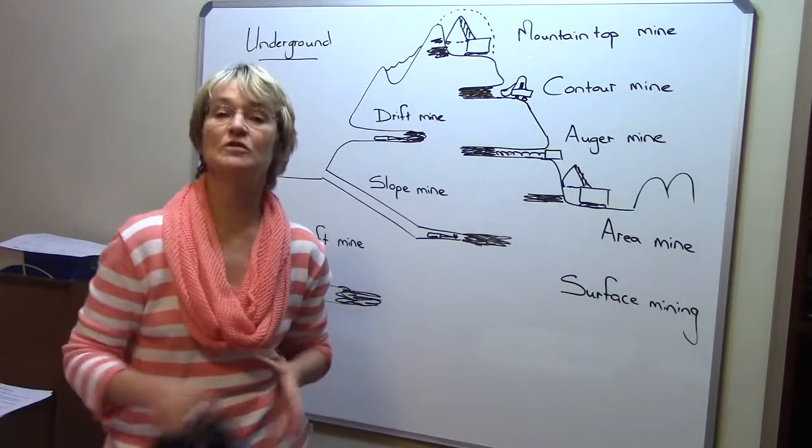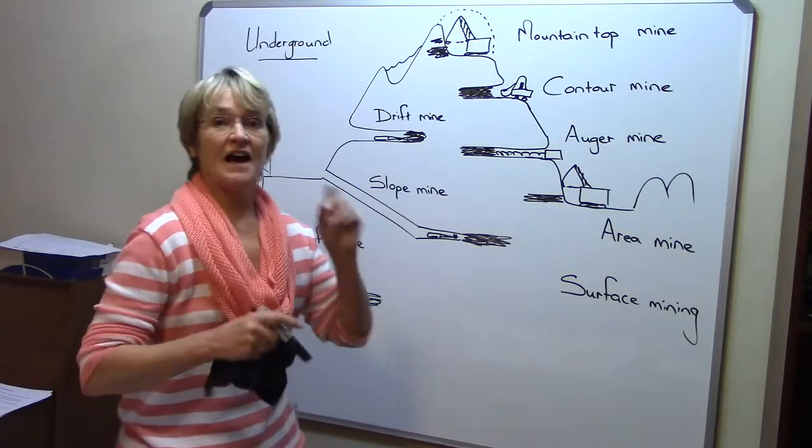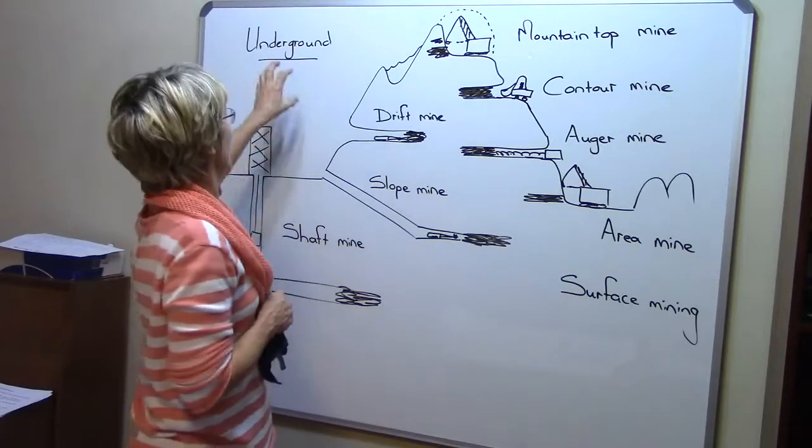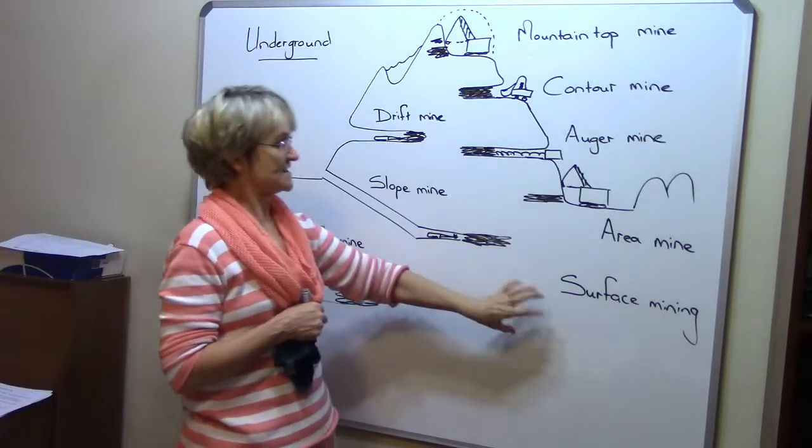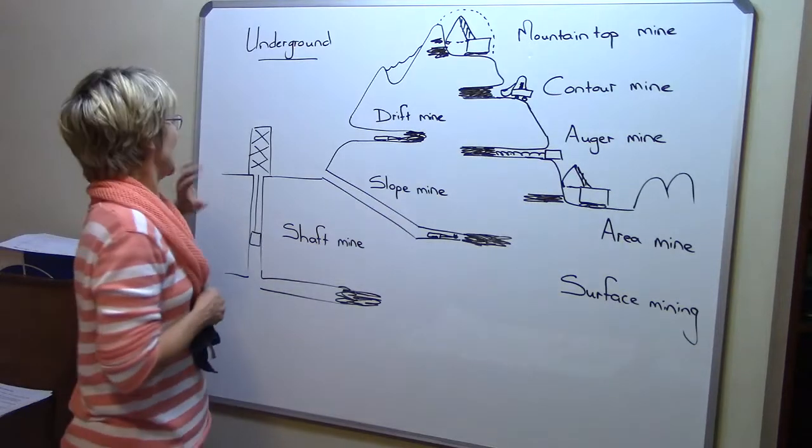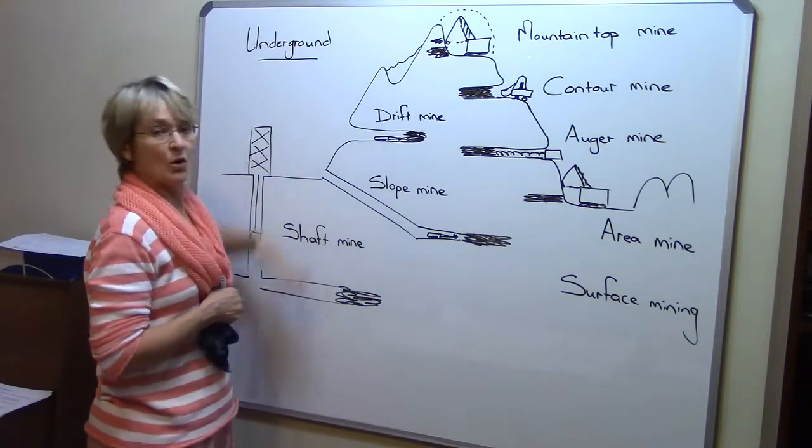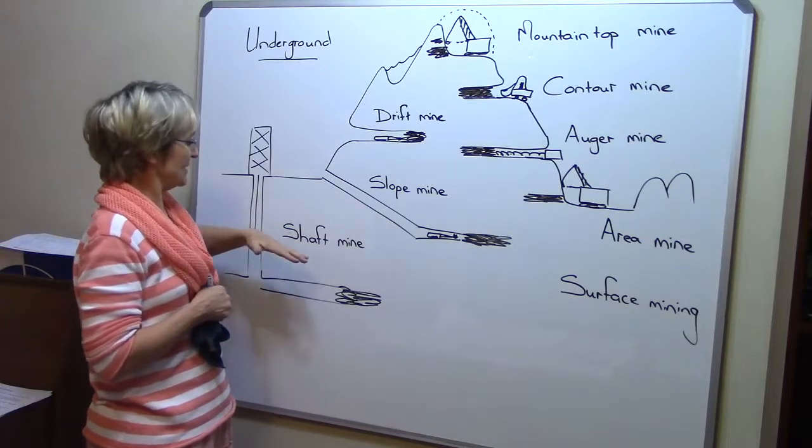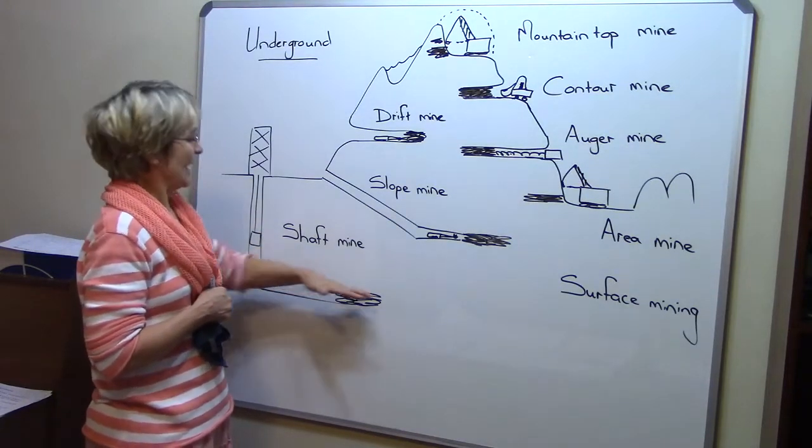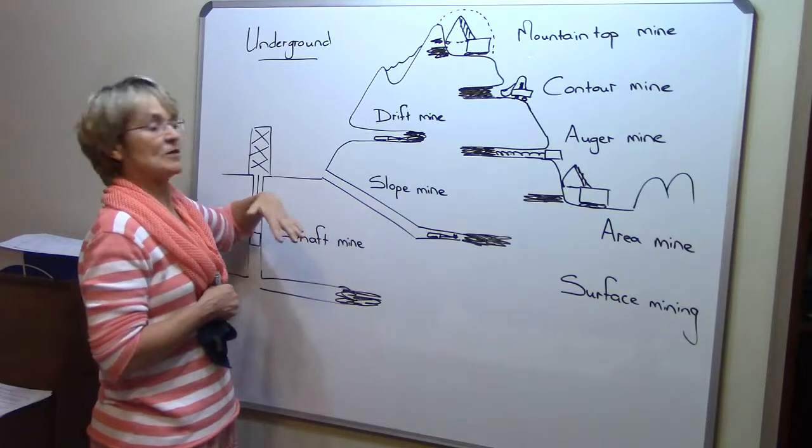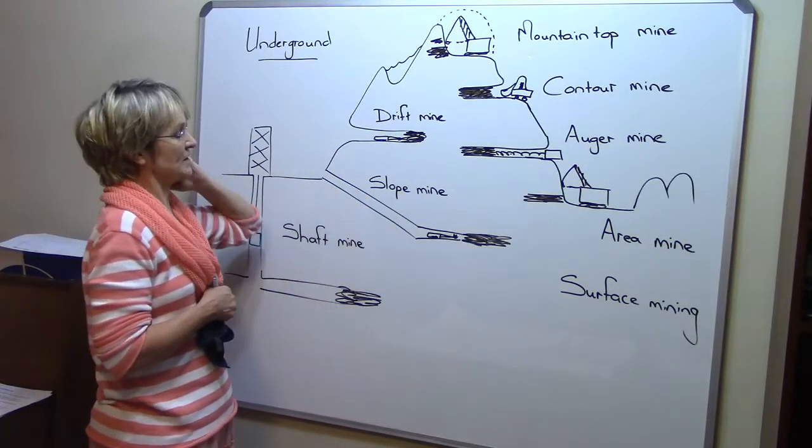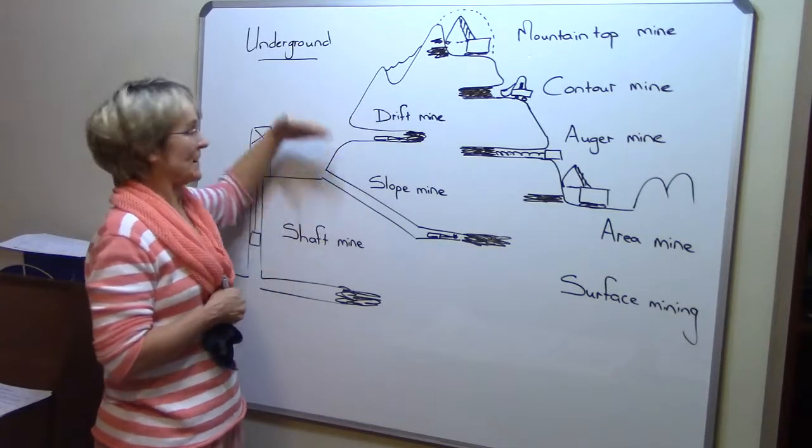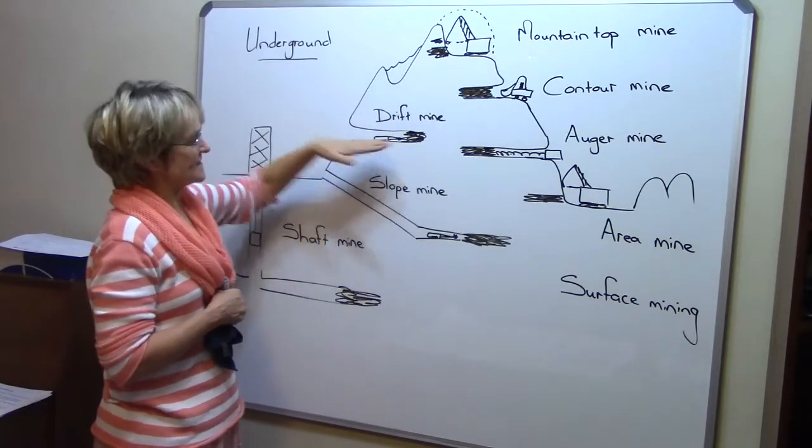First, coal needs to be removed from the earth's crust. They divide mining into two groups: underground and surface. Underground mining is mostly below ground level. Shaft mining is very deep. Slope mining is at the slope of a hill. Drift mining is above ground level but deeper.